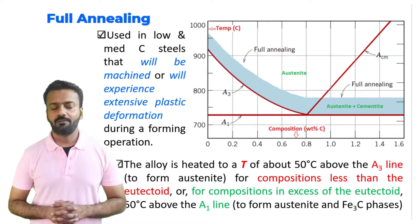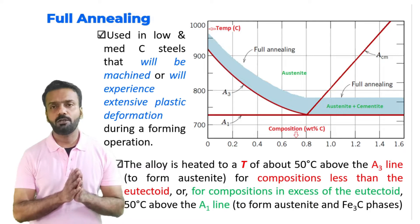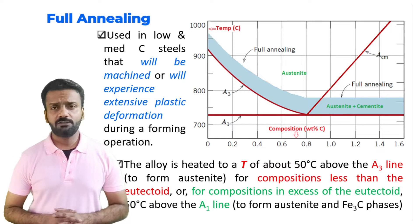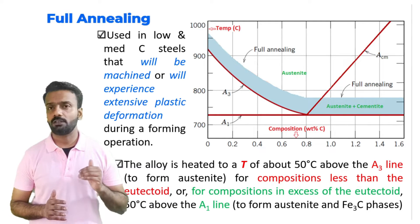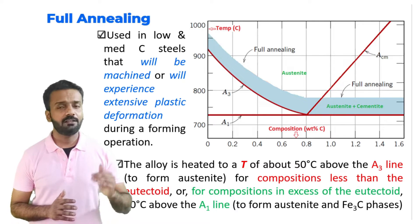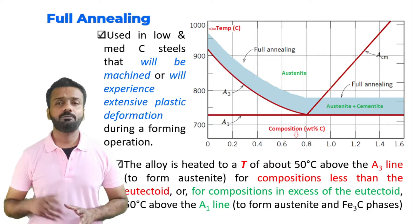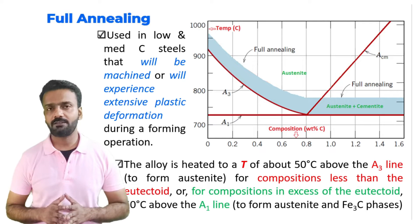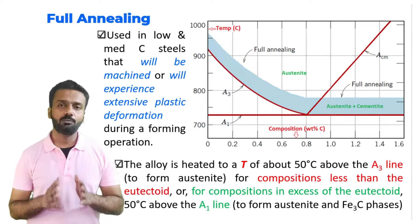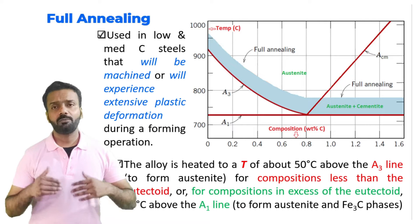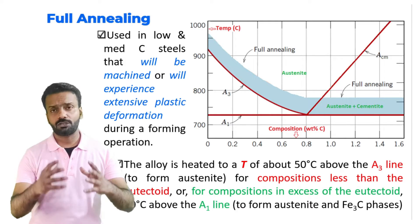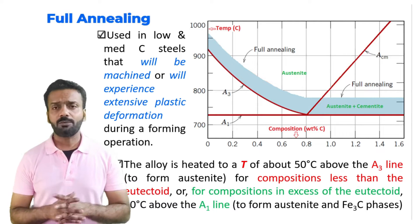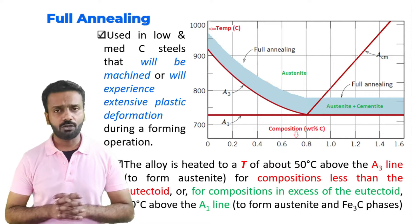Here is the phase diagram of iron and iron carbide, and we will look at the range of annealing temperature. For compositions which are less than the eutectoid, we go to about 50 degrees above the A3 line. For compositions beyond the eutectoid, we go just above the A1 line. When we heat above the A3 line for hypoeutectoid compositions, we are making sure the entire material is in the austenitic range, and we hold at that temperature so the entire material transforms to austenite.